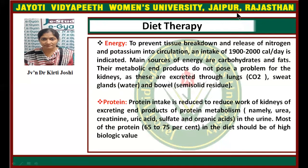Protein intake is reduced to reduce the work of the kidneys in excreting end products of protein metabolism, namely urea, creatinine, uric acid, sulphate, and some other organic acids in the urine. Most of the protein — 65 to 75% of the diet — should be of higher biological value.